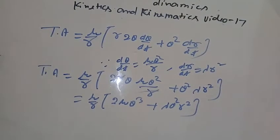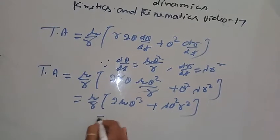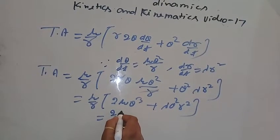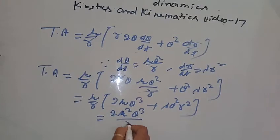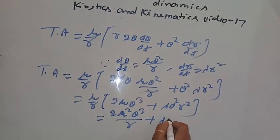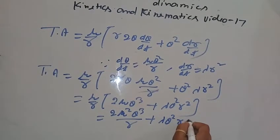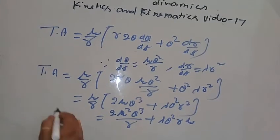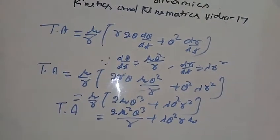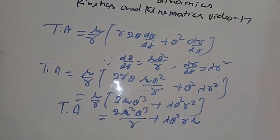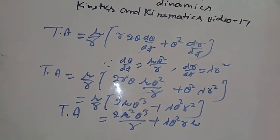This equals 2 mu squared theta cubed by r plus lambda mu theta squared r. This is the transverse acceleration value, which matches what was given in the question.